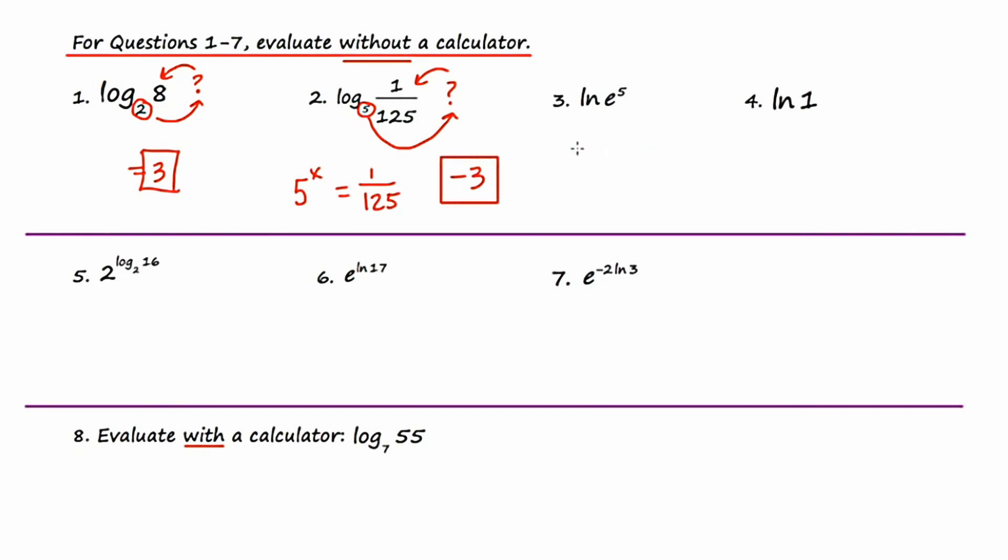Let's go to example three. Our implied base is e. If I do a schwing, e to some mystery power is equal to e to the fifth. What is the mystery power? It's going to be five.